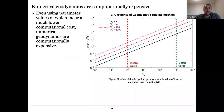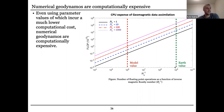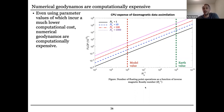Even with these generous parameter values, the models are still very expensive. This plot shows the number of floating-point operations needed for a simulation over a single magnetic free-decay time as a function of the inverse magnetic Rossby number. The main thing to get out of this is: if you move over to an earth-like value, you're increasing your computational expense by four orders of magnitude. We're just not close to being able to simulate in the true parameter regime of the Earth.